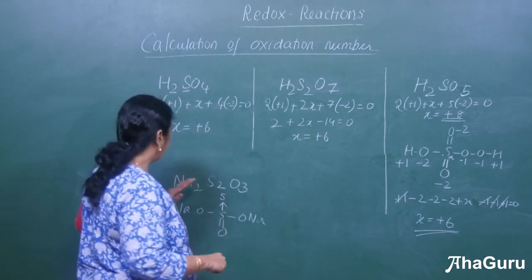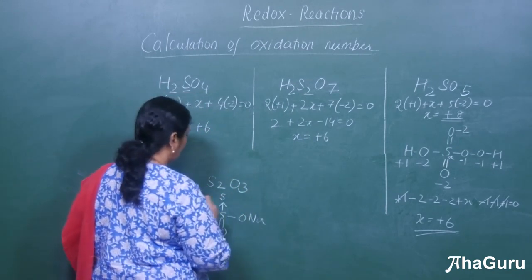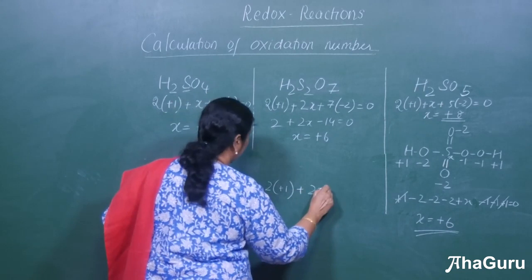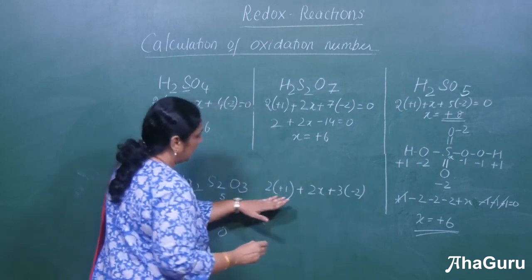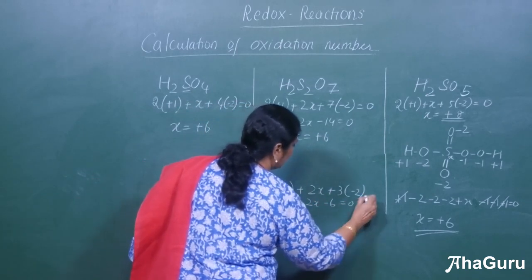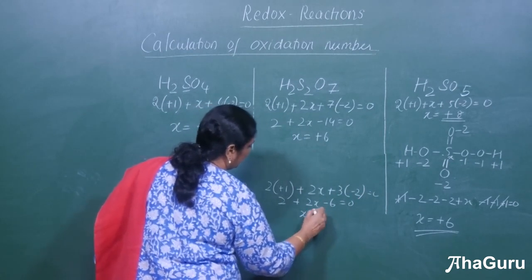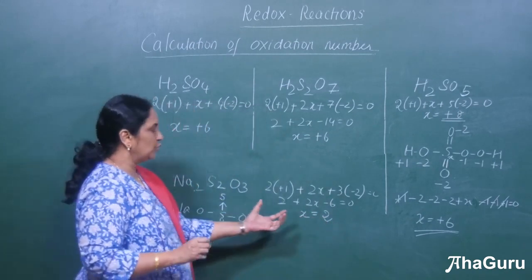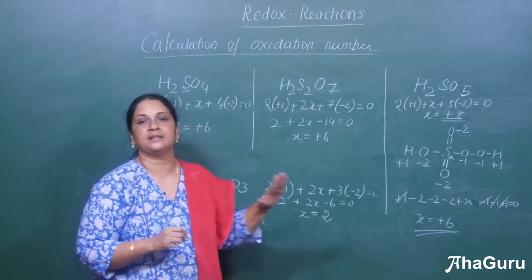Let us take a similar example: Na2S2O3. Using the conventional method: 2 × (+1) for sodium, plus 2 sulfur atoms so 2x, plus 3 × (−2) for oxygen, equal to 0. So: 2 + 2x − 6 = 0, giving x = +2. However, this is again not correct.